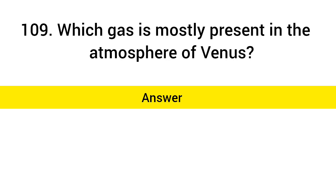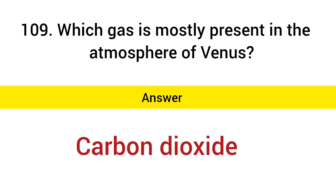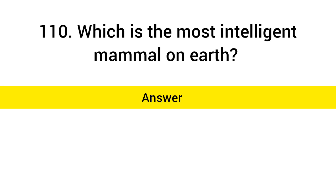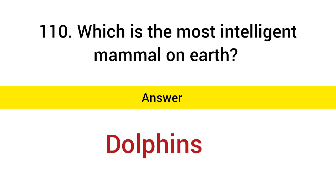Which gas is mostly present in the atmosphere of Venus? Answer: Carbon dioxide. Which is the most intelligent mammal on Earth? Answer: Dolphins.